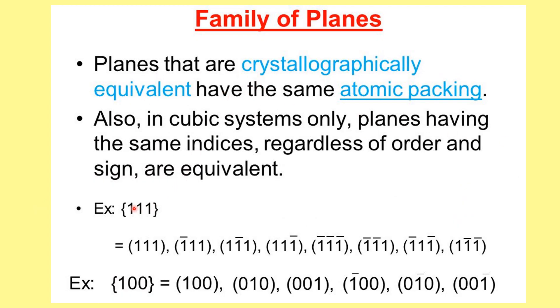Family of planes, we already discussed, is shown in curly brackets. {111} plane means it contains all the combinations in positive and negative directions. These are the set of our family of planes.